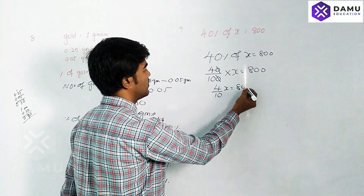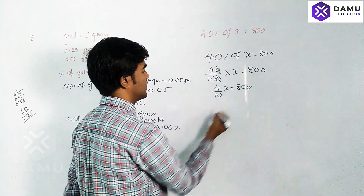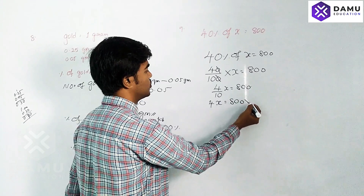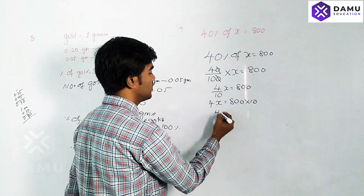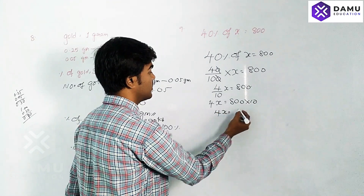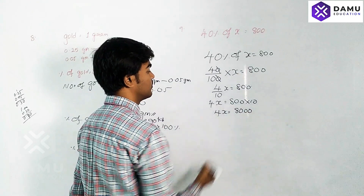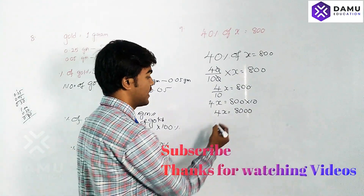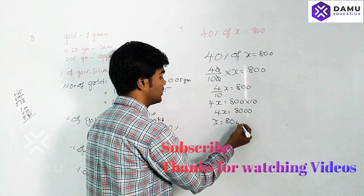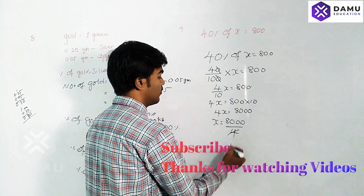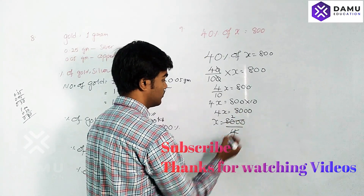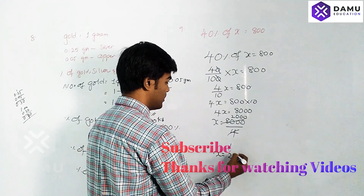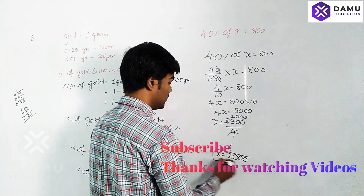Simplifying: 4x by 10 equals 800, so 4x equals 8000. Therefore x equals 8000 divided by 4, which is 2000. So that number is equal to 2000. We can verify: 40% of 2000 equals 800.